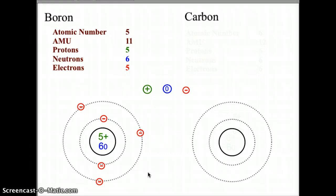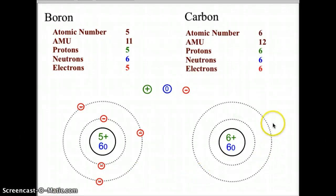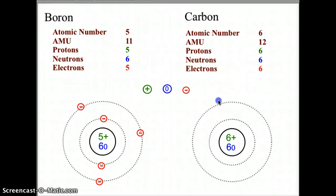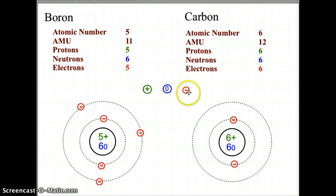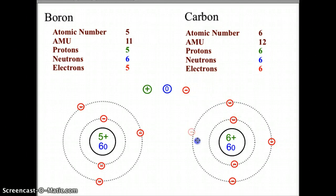Now go ahead and try carbon. Pause the video, complete your carbon Bohr model, and turn the video back on when you're ready to check your answer. Carbon has six protons, six neutrons, and six electrons — six protons and six neutrons in the nucleus. We then add two electrons in the first orbital and four in the second orbital. When placing the electrons for the first four, try to balance them out around the orbital level.